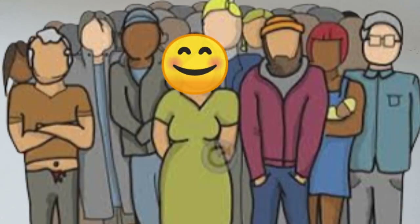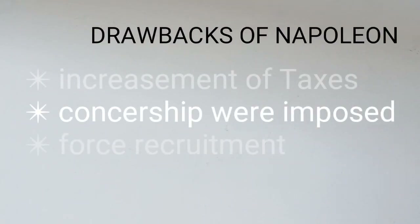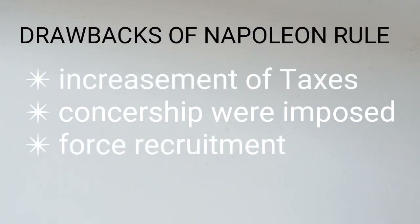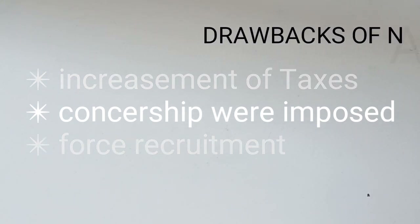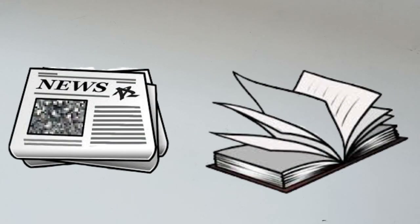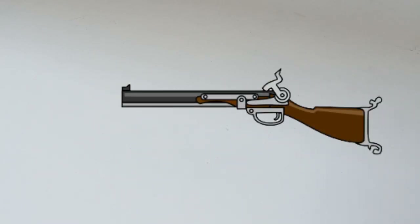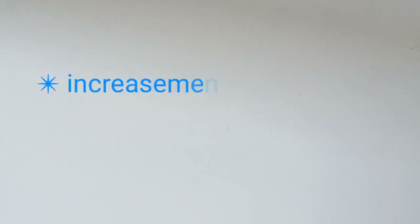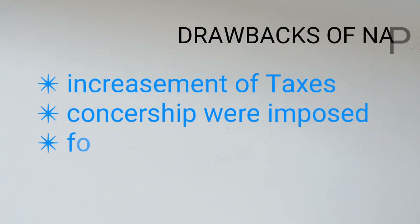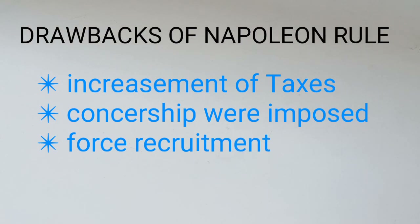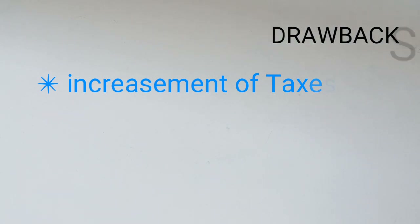France's people were very happy with Napoleon. However, there were some drawbacks to Napoleon's rule — he didn't do everything right. The first drawback is that taxes in France increased. The second drawback was a very wrong system called the Censorship System — if anyone wrote in a newspaper or books against him, they would be punished. And the third drawback is that people were forced to join the army. Everyone in France was compulsorily required to join the army.